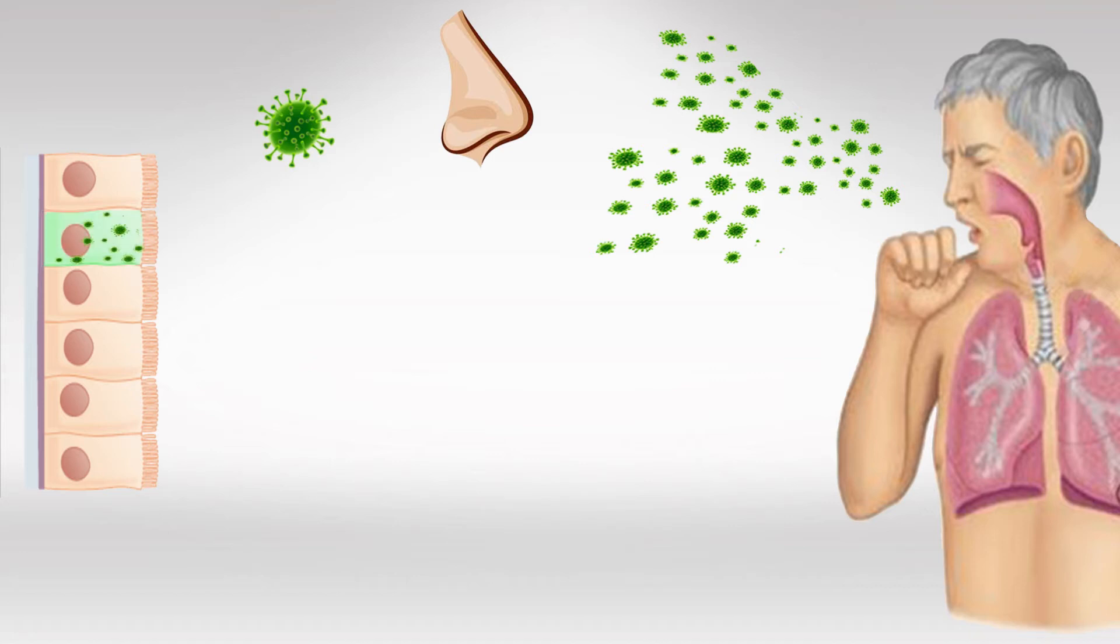Once inside the cell, the virus releases its genomes, which then becomes integrated within the DNA of the normal cell. This takes control over the cell and forces it to make more viruses, using the cell's nutrition, proteins, and resources.